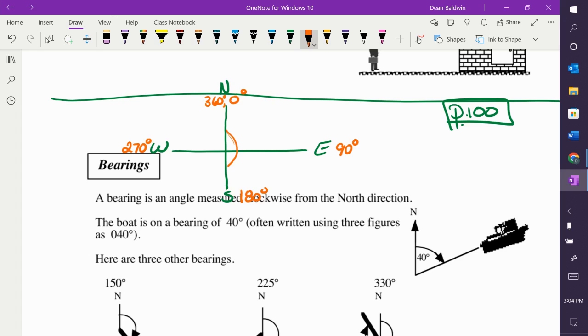So every quadrant is 90 degrees: 90, 90, 90, 90. Remember, you measure from north, which is zero, and then you go clockwise, and every quadrant is 90 degrees.